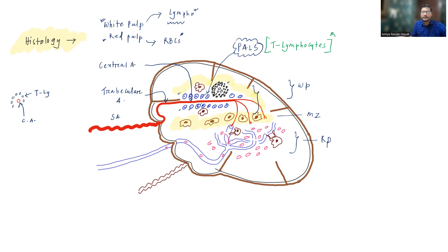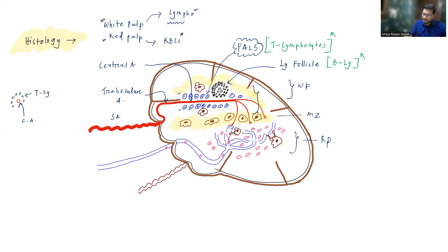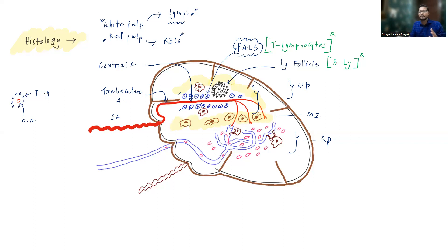Sometimes near this central artery you can find lymphoid follicles. These lymphoid follicles are made up of B lymphocytes. So the entire structure is known as white pulp — it contains the central artery with peri-arteriolar lymphoid sheath made up of T lymphocytes, and sometimes lymphoid follicles made up of B lymphocytes.